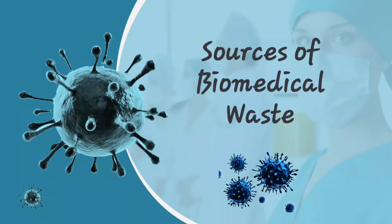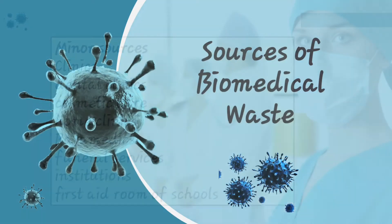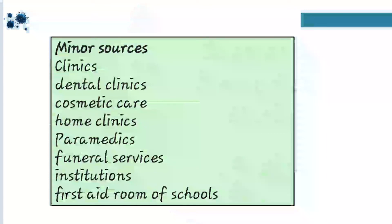Now, what are the sources of biomedical waste? There are two types of sources — minor and major. Minor sources are where less waste is produced, like clinics, dental clinics, cosmetic care, home clinics, paramedics, funeral services, institutions, and first aid rooms of schools. The waste produced here is less and not as infectious, which is why we call these minor sources.